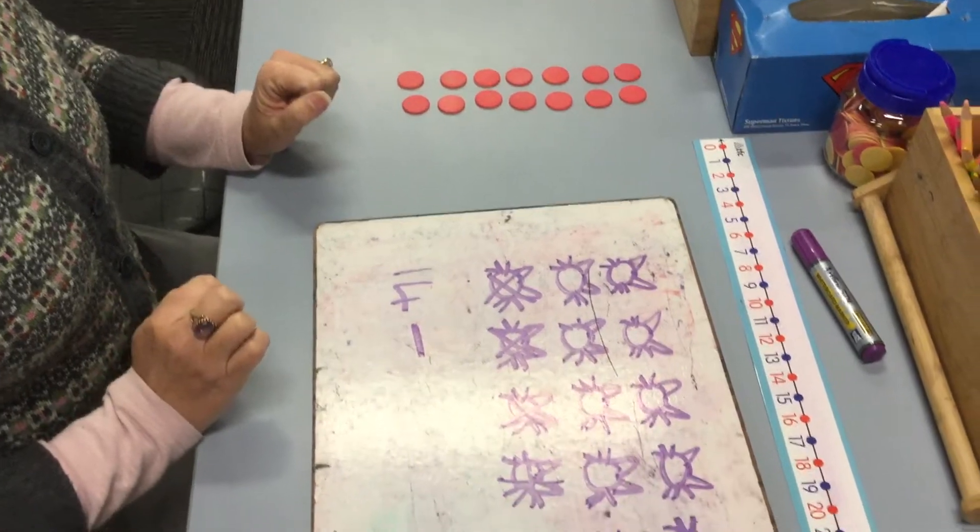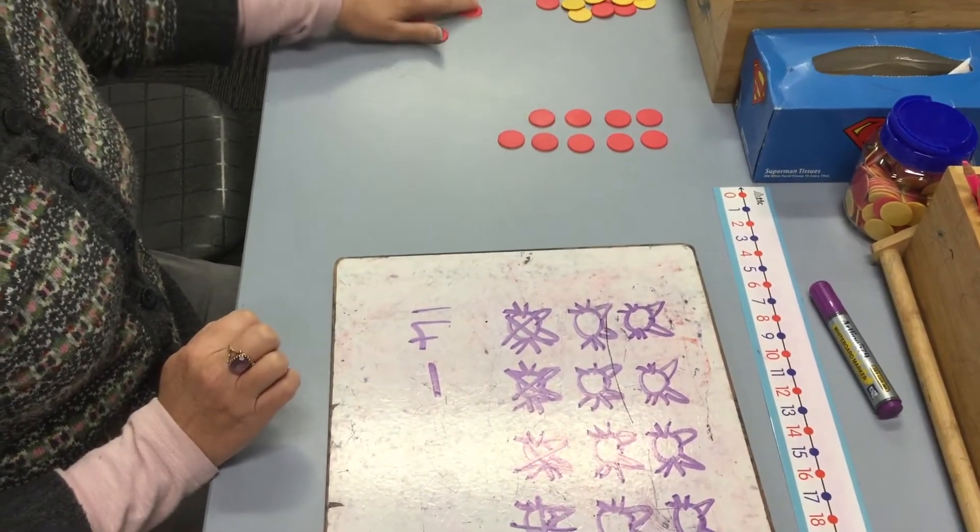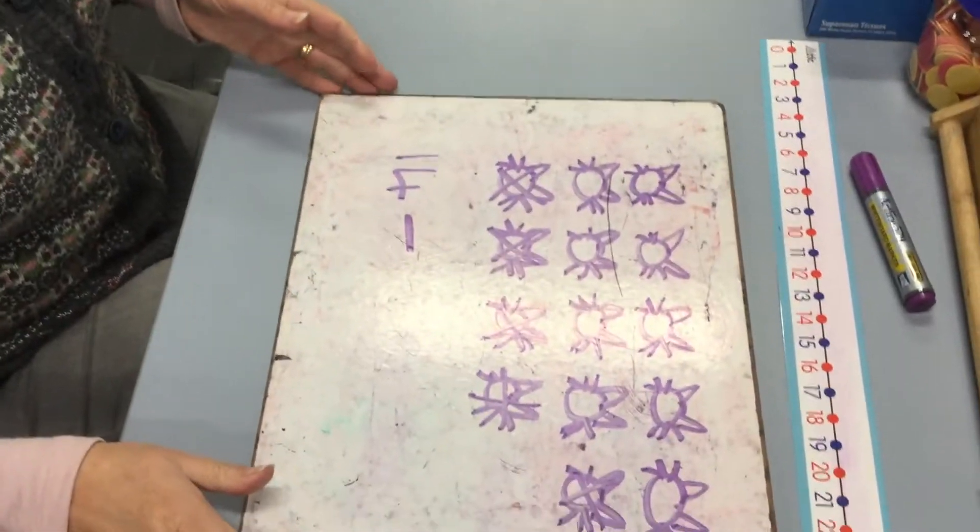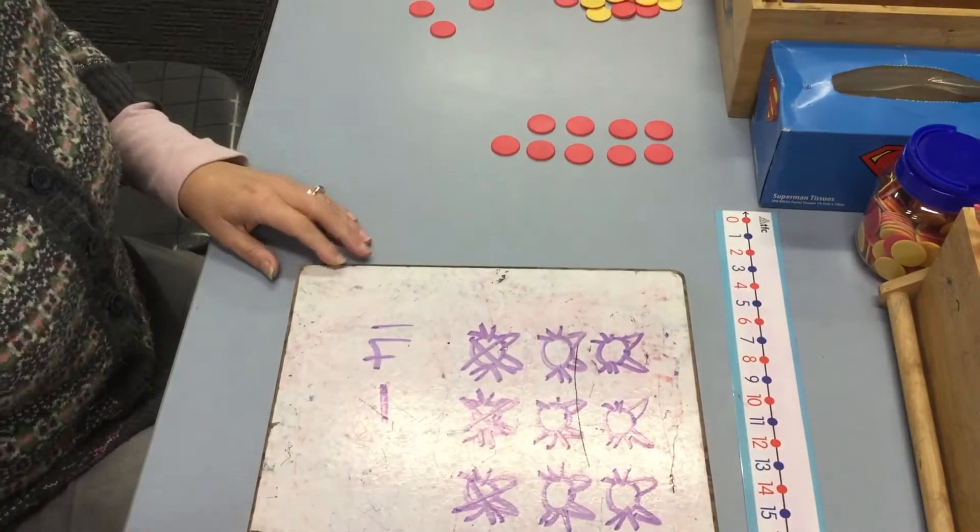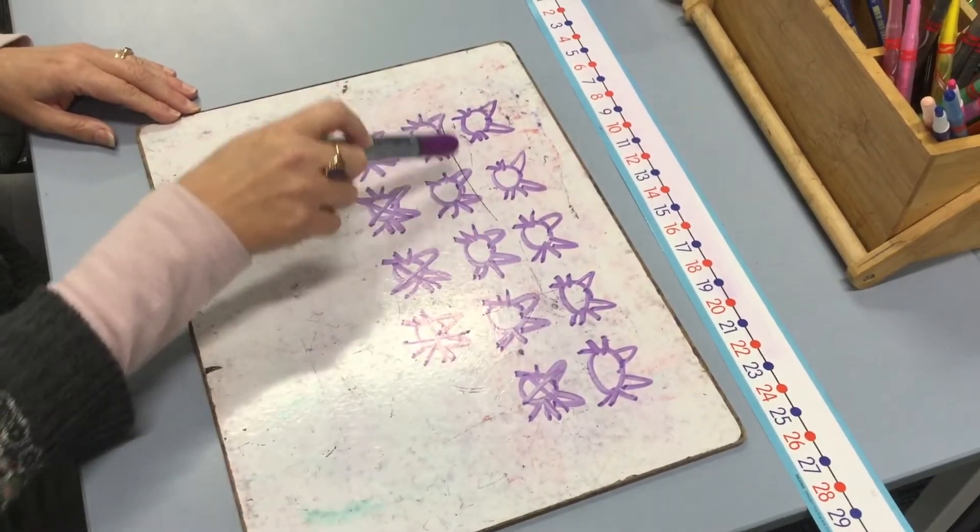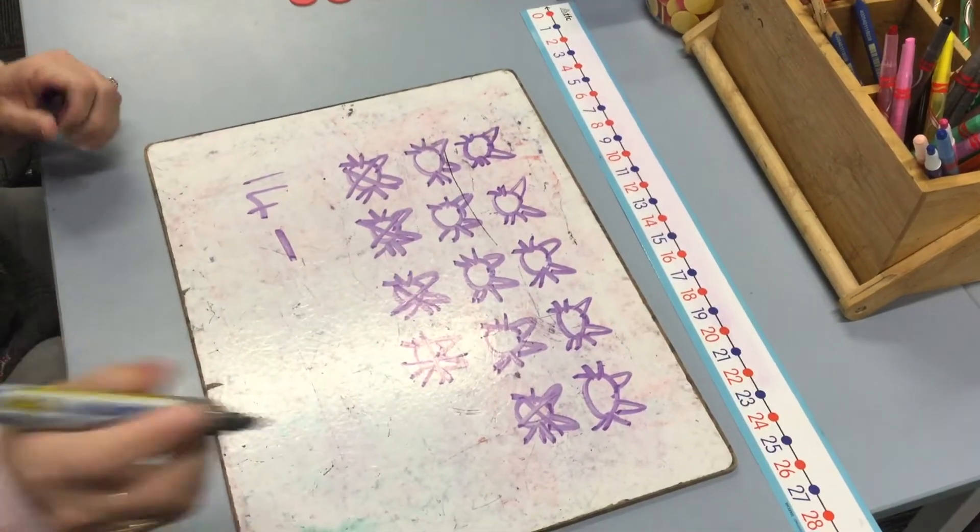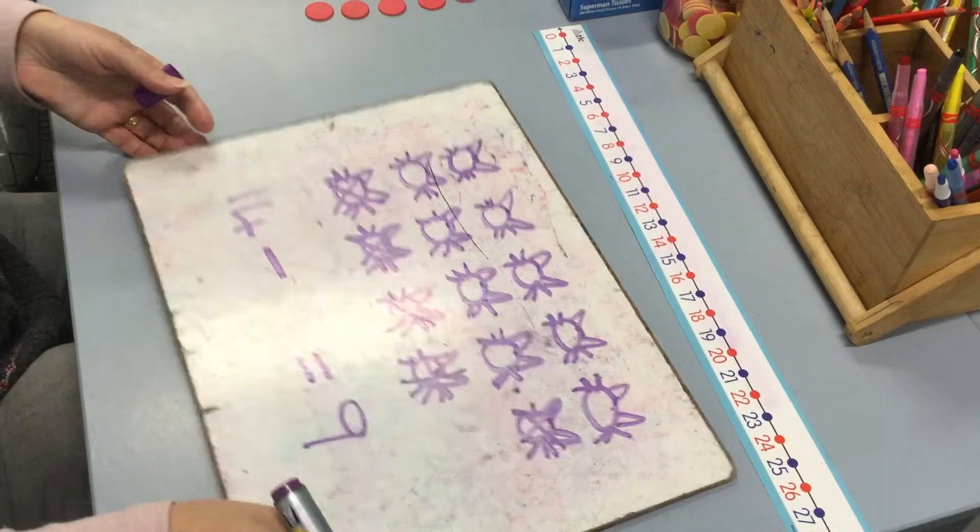I was going to take away five, so one, two, three, four, five. How many does that leave us with? Well, five, six, seven, eight, nine. Let's see, let's make sure: there's five, there's nine here—one, two, three, four, five, six, seven, eight, nine.